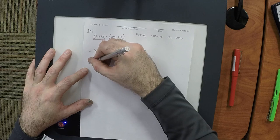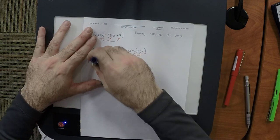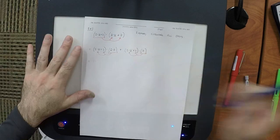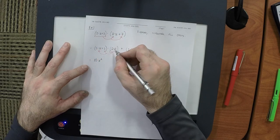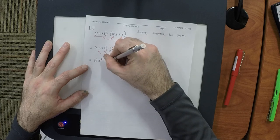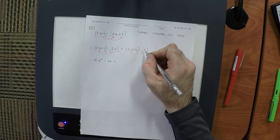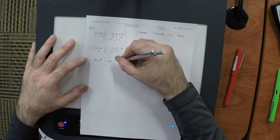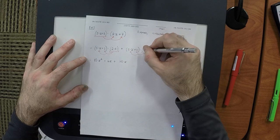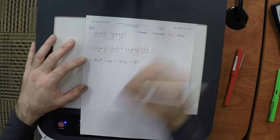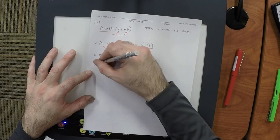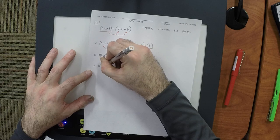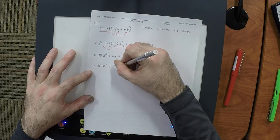So: 2x times 5x is 10x squared; 2x times 3 is 6x; 7 times 5x is 35x; 7 times 3 is 21. Is our answer in standard form? No — we need to collect the like terms 6x and 35x. So the final answer is 10x squared plus 41x plus 21.